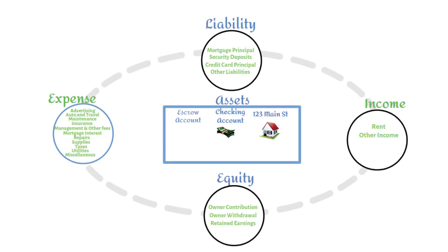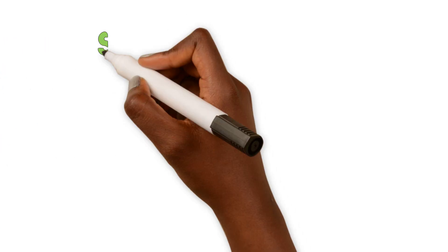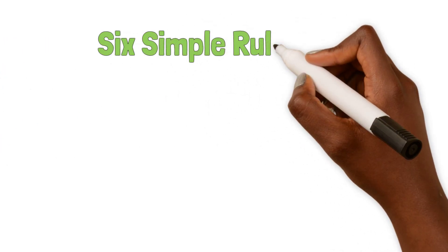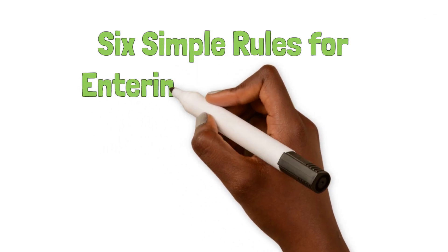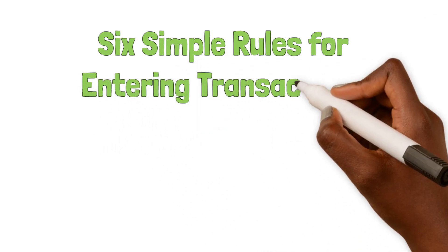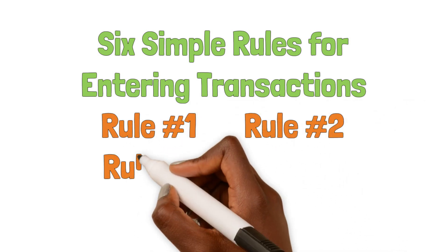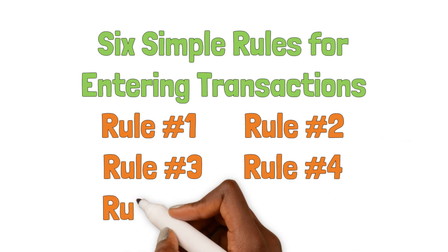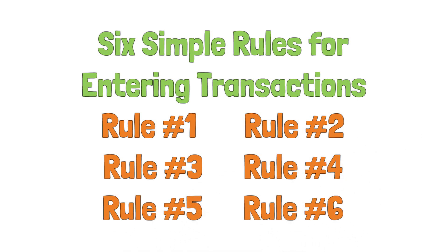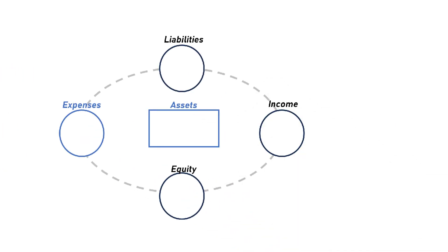In one of the previous videos we established all of the main categories of accounts that you would need to enter the typical financial transactions that would occur in your real estate business. We even showed you how you would enter a few of these transactions. Since it is simply not possible to list how you would enter all of the possible transactions that can and will occur in your business, we thought it would be helpful instead to understand the six simple rules that you should follow in order to enter any financial transaction that occurs in your business.